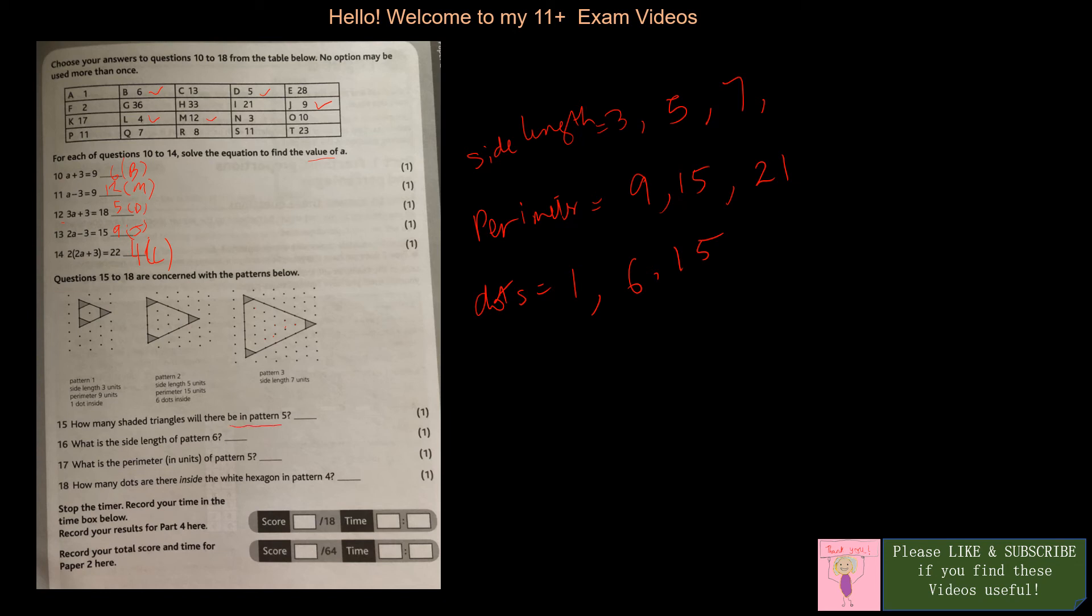The question is, how many shaded triangles will there be in pattern 5? There are 3 shaded triangles in all of them, so it's going to be 3, it doesn't change. What is the side length of pattern 6? This is pattern 1, 2, 3. The next side length should be 3 plus 2 is 5, 5 plus 2 is 7. They're all increasing by plus 2, so it's 9, plus 2 is 11, plus 2 is 13. Pattern 6, it is 13, and 13 is in C.